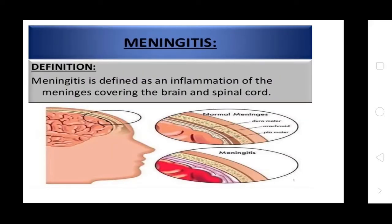Definition of meningitis: meningitis is defined as inflammation of the meningeal coverings of the brain and spinal cord, including the cranial and spinal nerves.